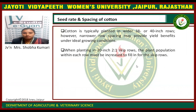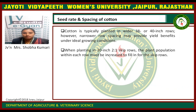Seed rate and spacing of cotton. Cotton is typically planted in wider 38 or 40 inches rows. However, narrower row spacing may provide yield benefits under ideal growing conditions. When planted in 30 inches to 1-skip-row ratio, the plant population within each row must be increased to compensate for the skip row.